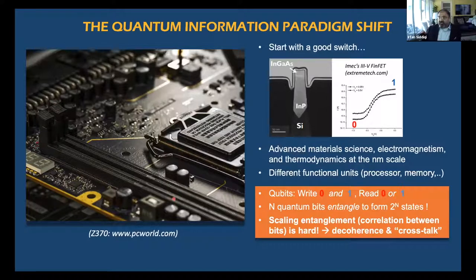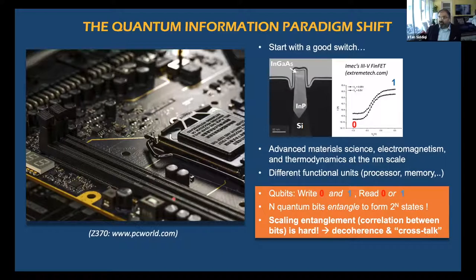Generating entanglement is challenging, and keeping it from being stolen is also challenging. You may lose entanglement to an environment — going into a bath from which you don't recover the information — but you may also have 'robbers in plain sight': wires, other qubits, and so forth. This becomes a very challenging problem as you increase qubit count. I put 'crosstalk' in parentheses because this word has different meanings for different communities.